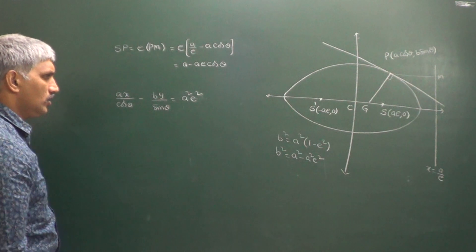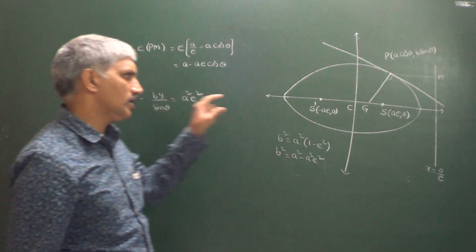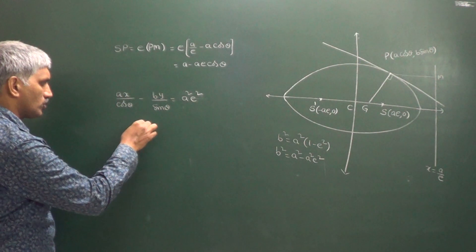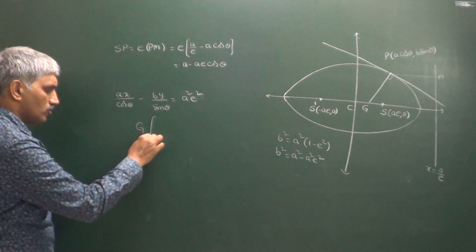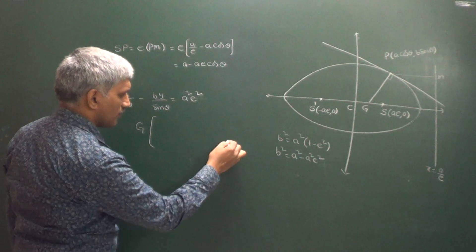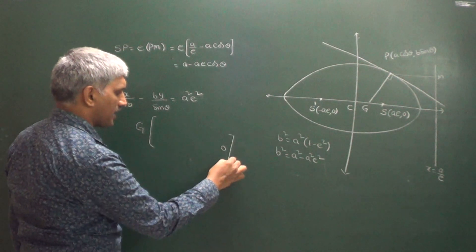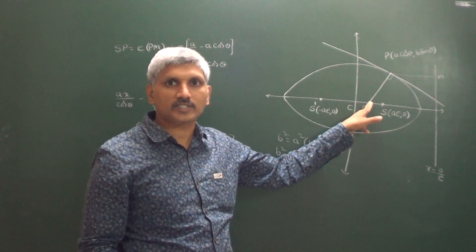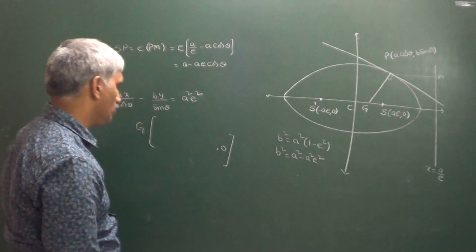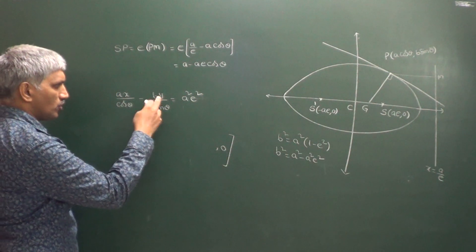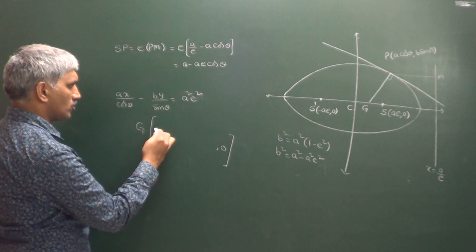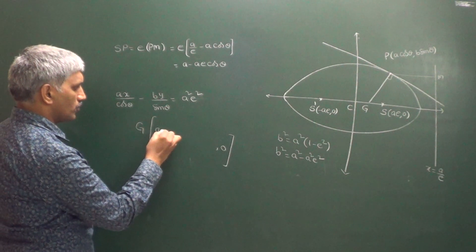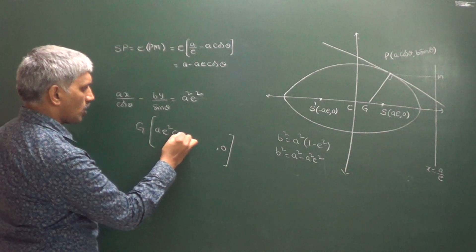The normal intersects the X-axis at point G. To get the coordinates of G, we put Y = 0, because G is on the X-axis. Substituting Y = 0, we get X = AE² cosθ.